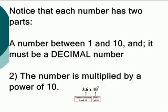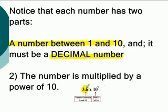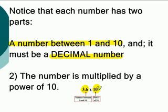Scientific notation has two parts. The first part is a number between 1 and 10 — it must be a decimal number. Looking at an example, the decimal number comes first and is a number from 1 through 10, and then it also has to have an exponent — 10 raised to some power. So scientific notation must have a decimal number from 1 through 10 and a 10 to the power component.